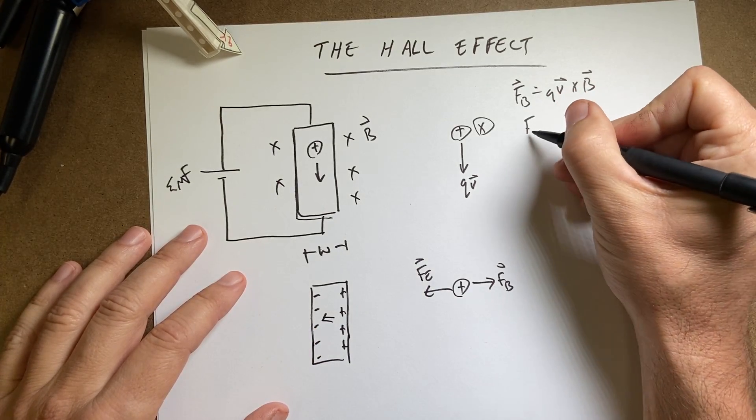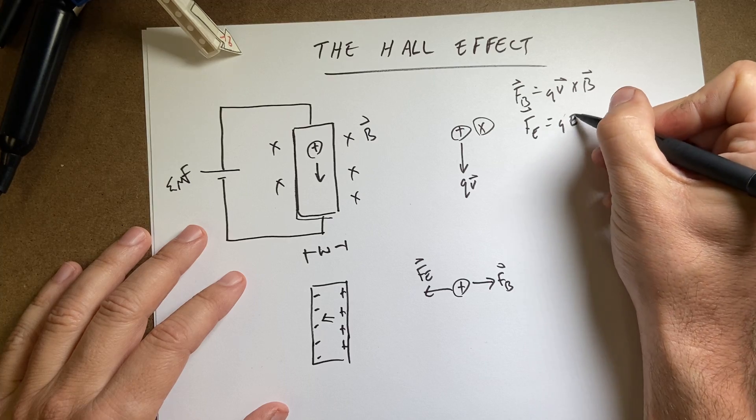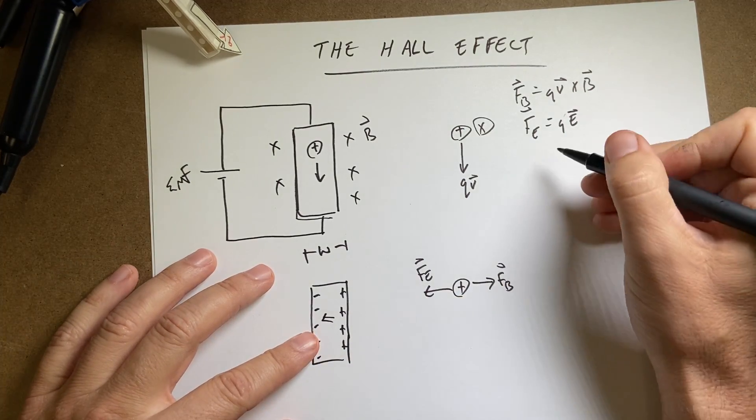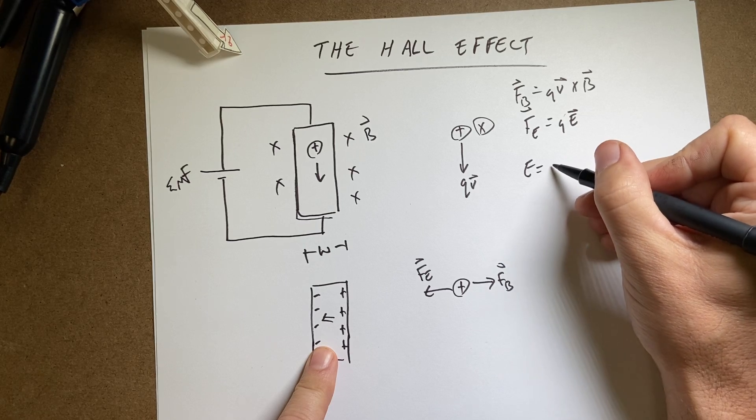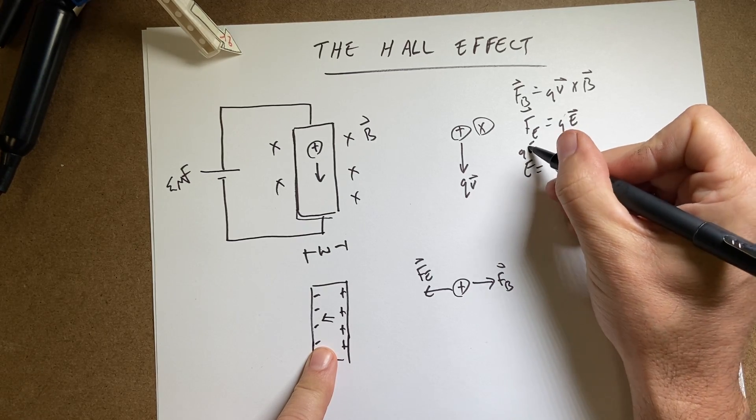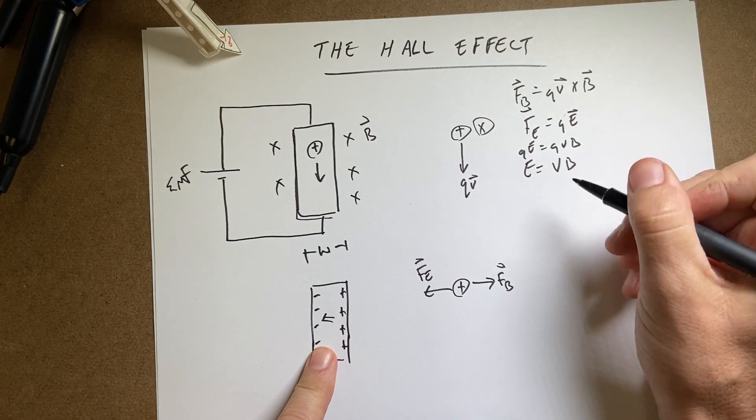So the electric force, FE, is Q times E. So everything's perpendicular here. So this is going to keep happening until E equals VB. Technically it would be QE equals QVB, but the Q's cancel.